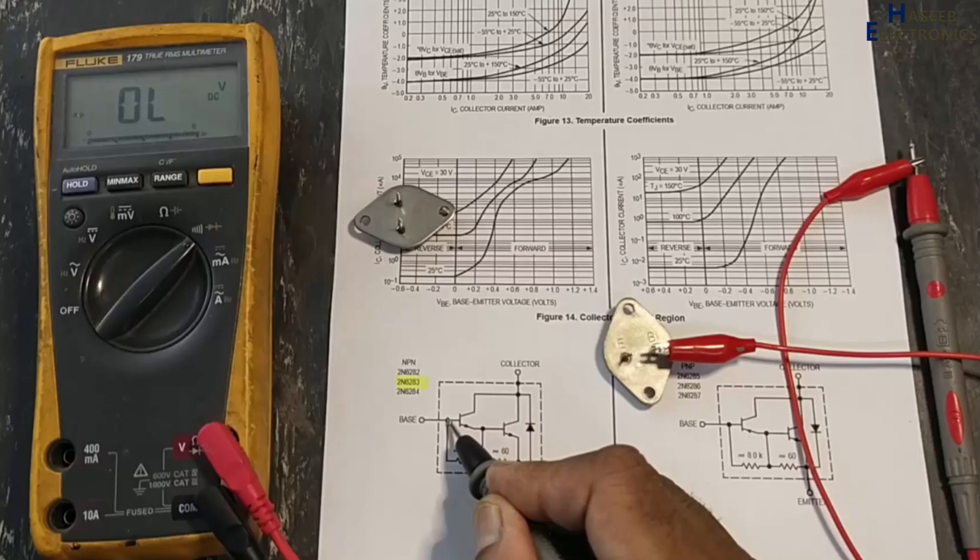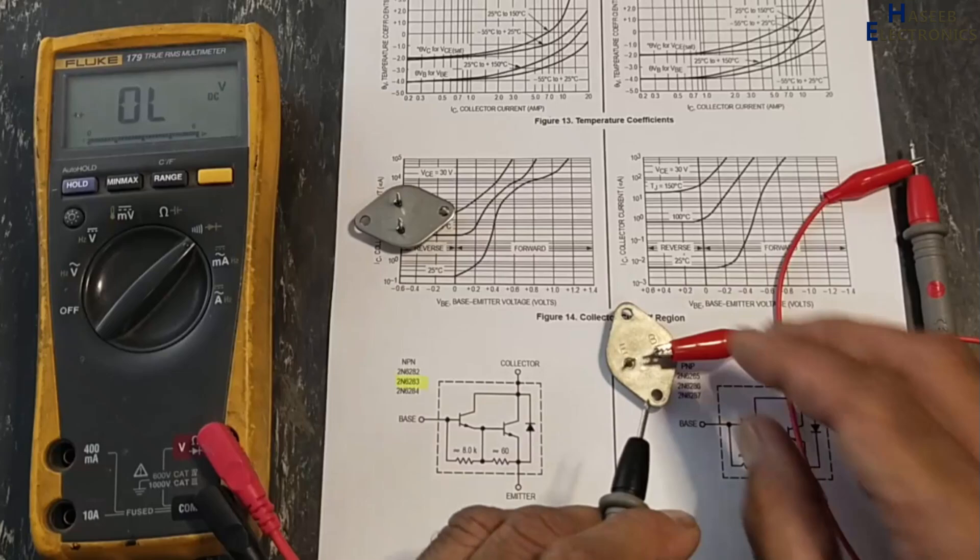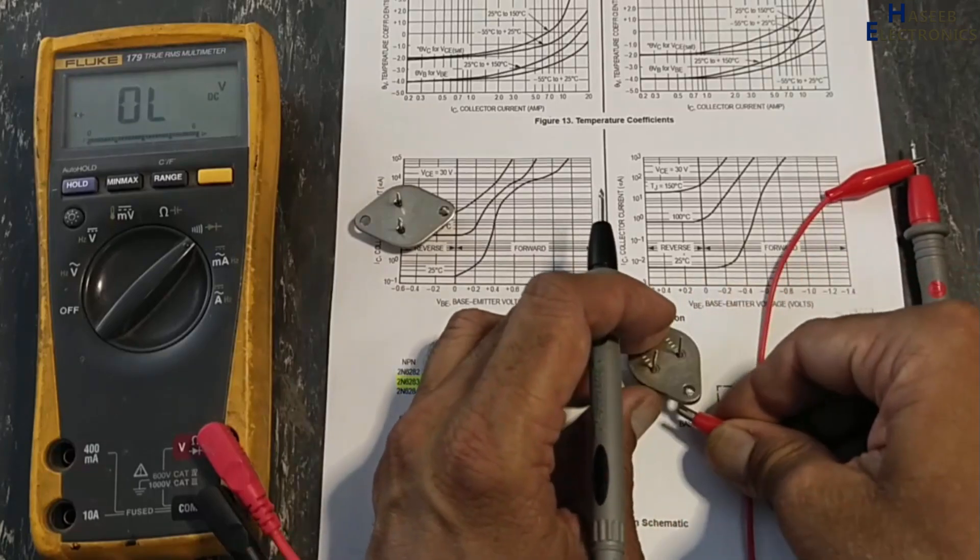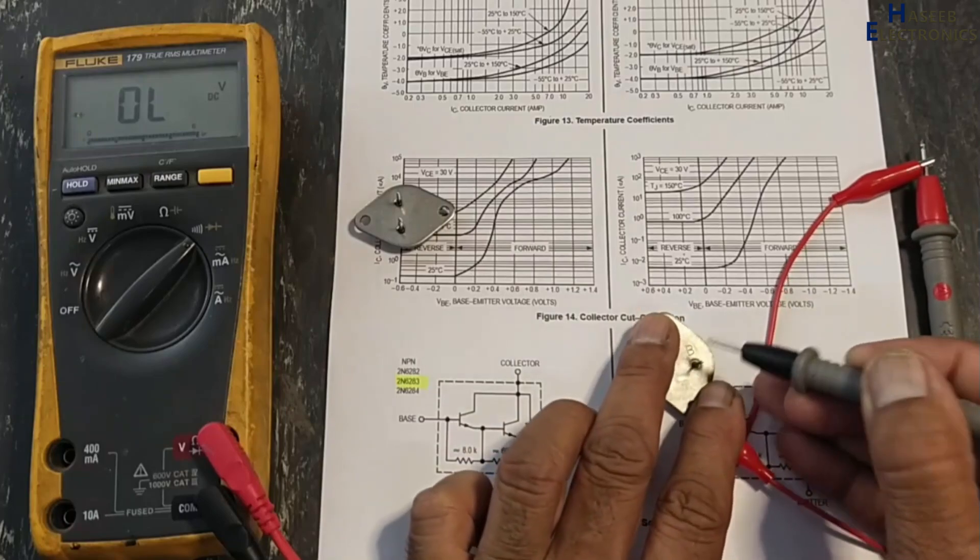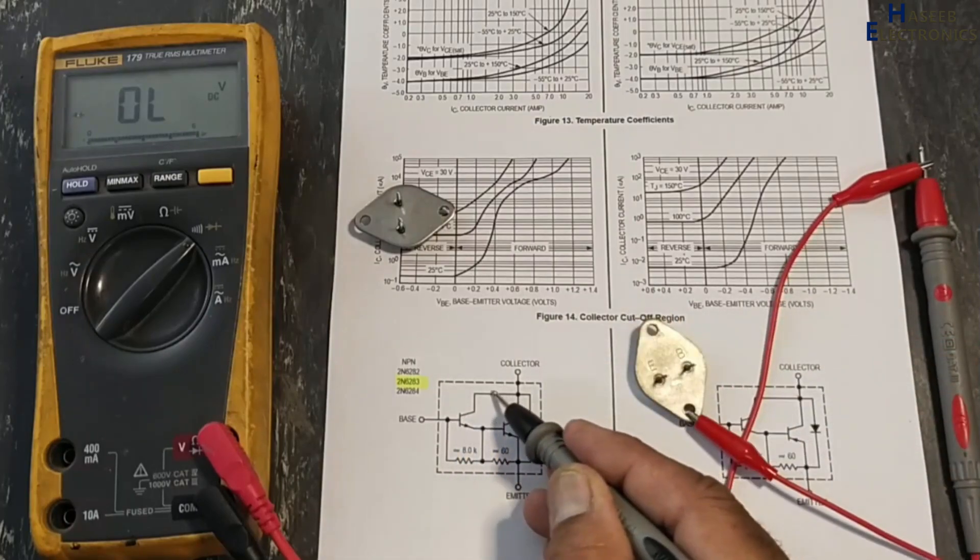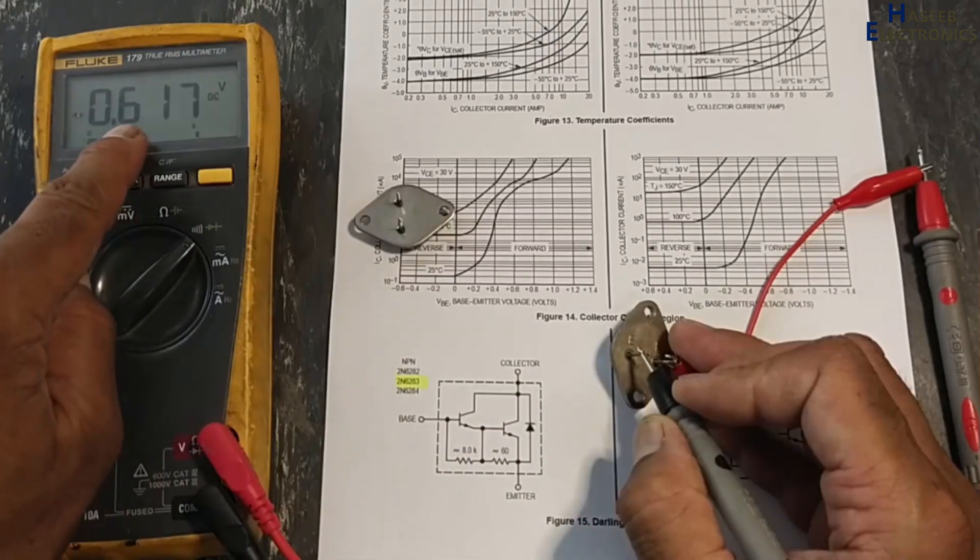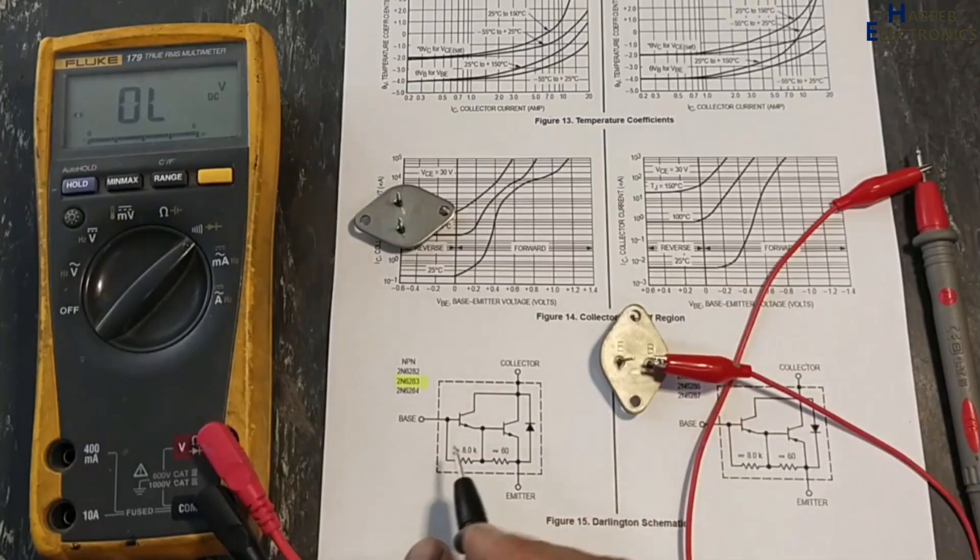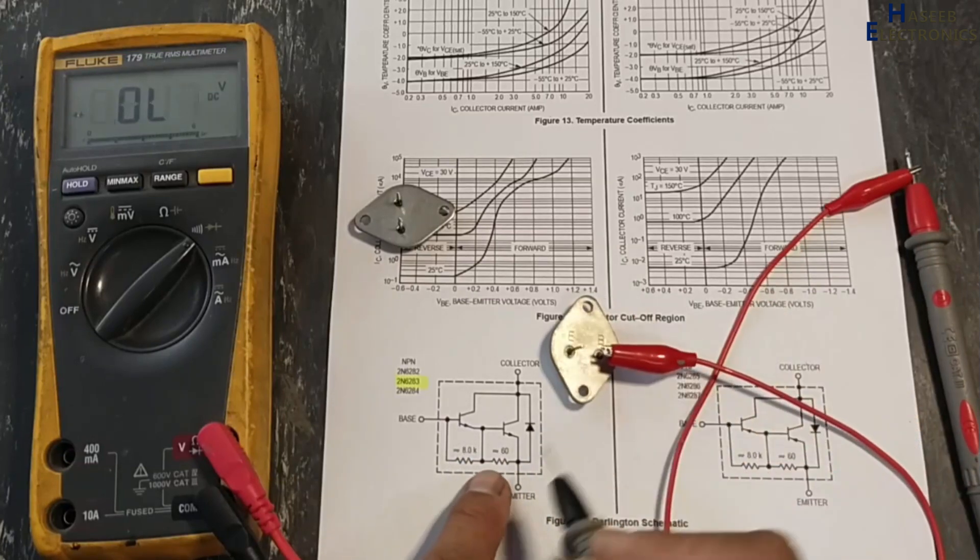Now we will reverse the leads at the same point. Red lead at collector, black lead at base. This junction is now reverse biased. Red lead at base, black lead at emitter, 0.617. This time we are testing two paths: the first path this one, second path this one. 60 ohms resistor with this junction in this way.